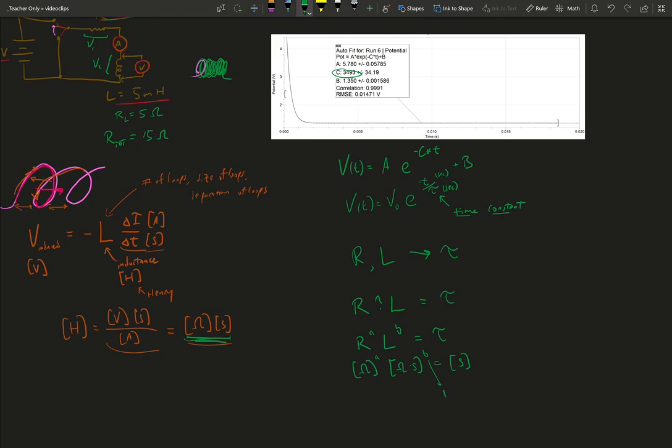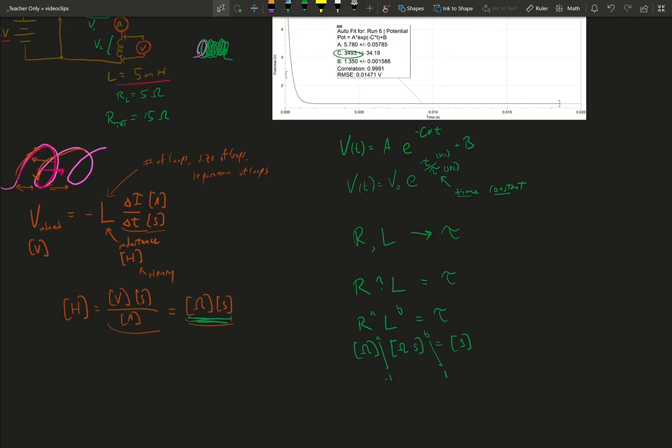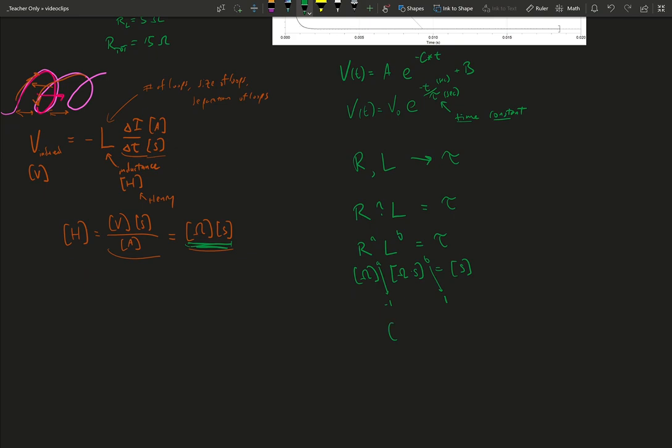There's no other way this is going to work out to have one factor of seconds in my final unit. So by process of elimination here, A would have to be the power of minus 1. So that means I would have ohms times seconds over ohms. This gives me seconds. The ohms cancel out.